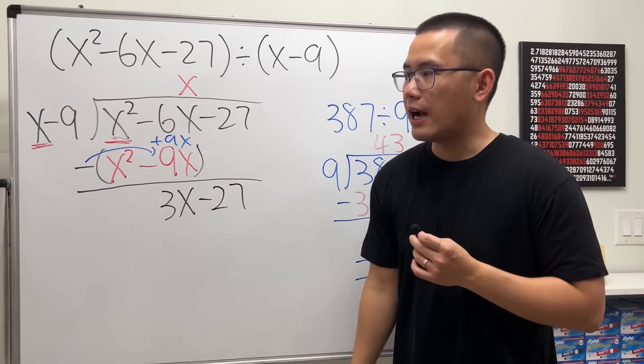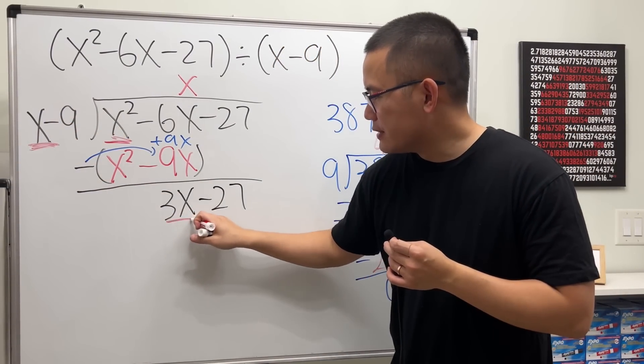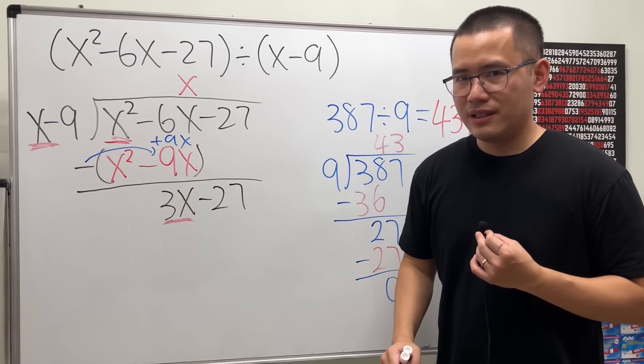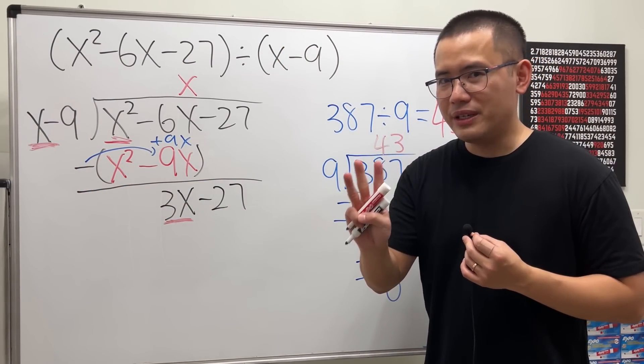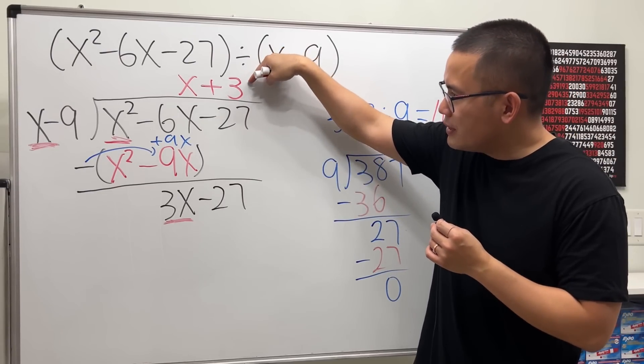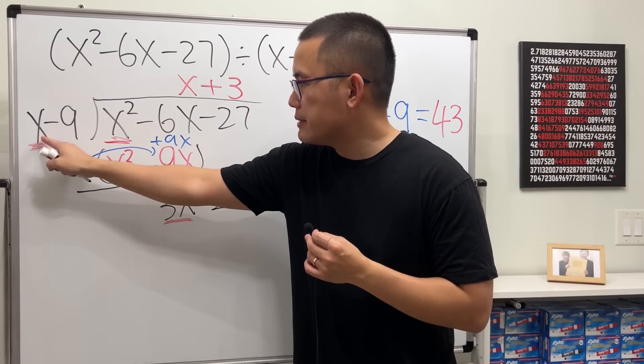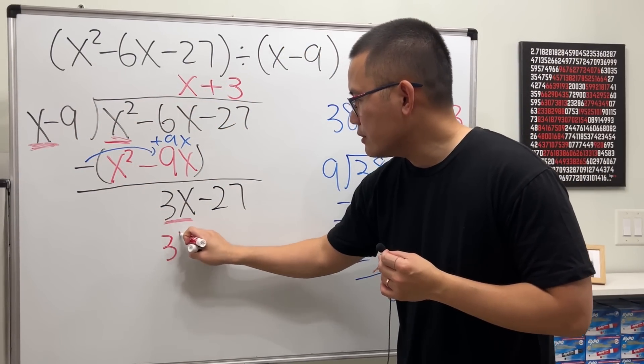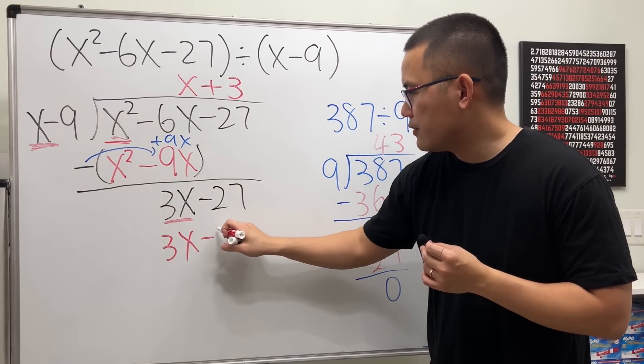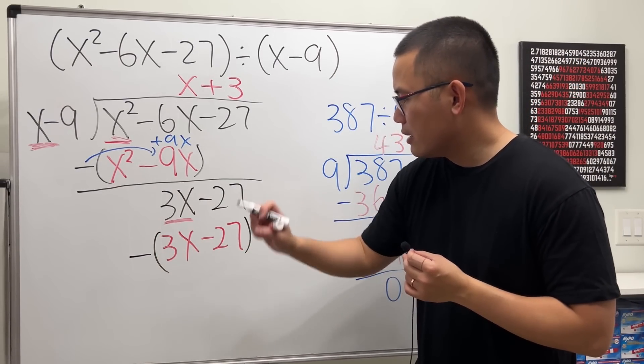And then again, you compare the first thing of the outside and the first thing of the inside. x and 3x, what do we need? The answer is 3, and it's a positive 3, so we need to have plus 3. And once you put this down, you take whatever this is, multiply with the first thing. 3 times x is 3x, so write that down. And then 3 times negative 9 is negative 27. And again, we subtract. Put subtraction and then parentheses.